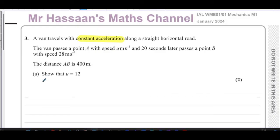From A to B, we have S, U, V, A, and T. So S is 400 meters, U is what we have to find, V is 28 meters per second, A is something we don't know, and T is 20 seconds. With this information we want to find U, so we have S, U, and V, and T that we have to use, and I guess we can use the basic formula.